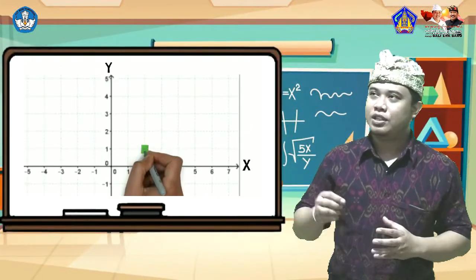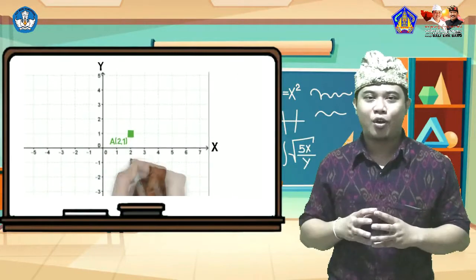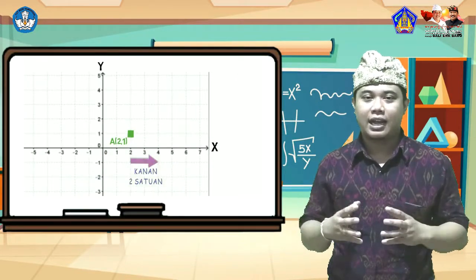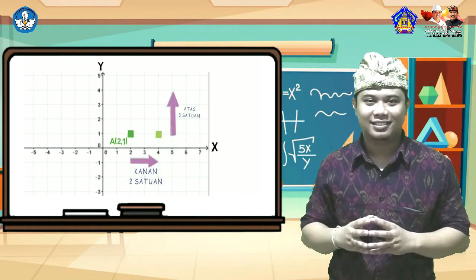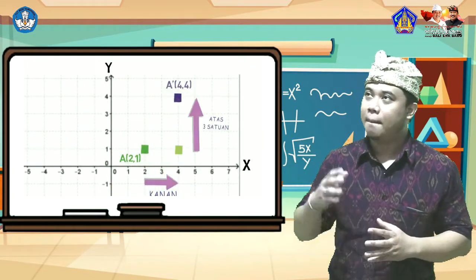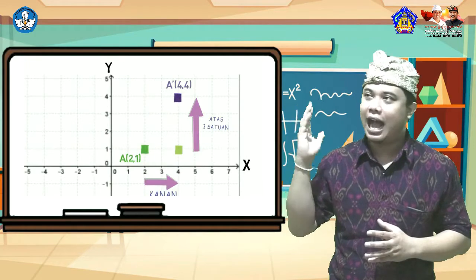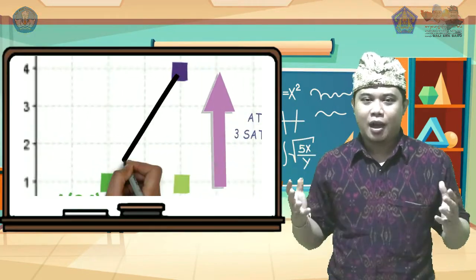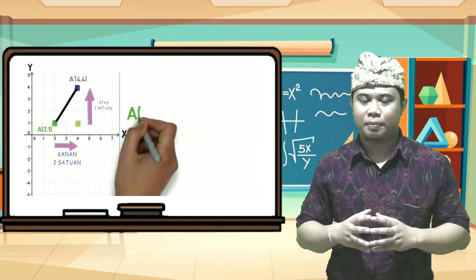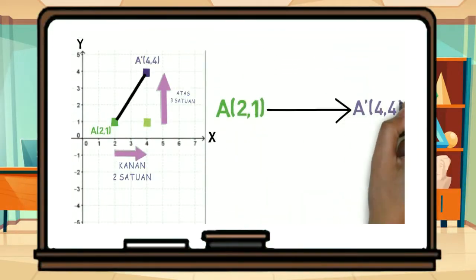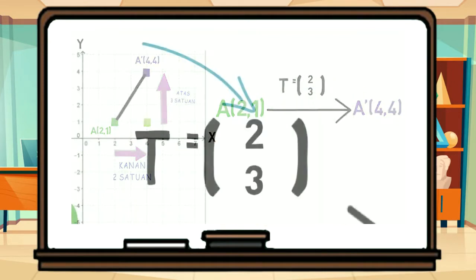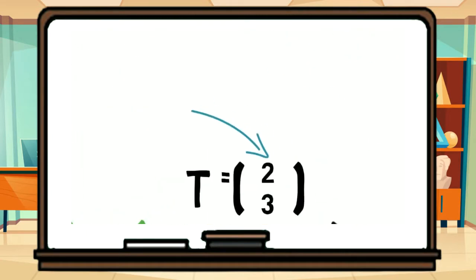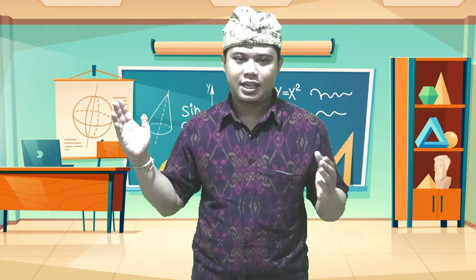Sahabat semua, di sini kakak punya sebuah titik A, yaitu (2,1). Titik A ini kakak akan geser ke kanan 2 satuan dan ke atas 3 satuan, maka kita akan dapatkan posisinya adalah di titik (4,4), yaitu di titik A aksen. Proses transformasi ini kita bisa tuliskan seperti berikut, yang berarti bahwa titik A ditransformasi berdasarkan pada matriks translasi (2,3). 2 menunjukkan pergeserannya ke arah horizontal, yaitu ke kanan 2 satuan. Ke kanan menunjukkan positif, jadi positif 2.